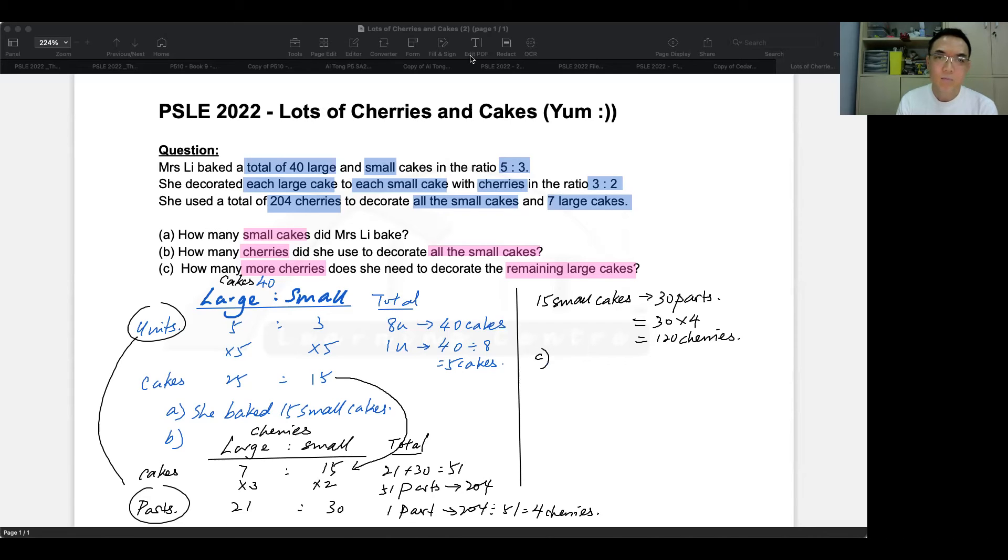Part C is asking how many more cherries is needed for the remaining cakes. How many cakes has she already decorated using the 204? The answer is that she has already decorated seven cakes using the 204 cherries. And more importantly, every cake required three parts of cherries. What I need to know now is how many more cakes, the remaining large cakes, how many more cakes I need to put cherries on.